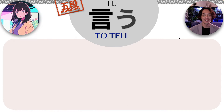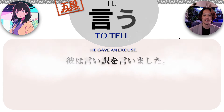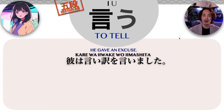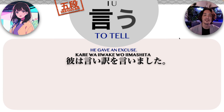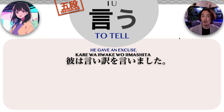Now let's learn three sentences using the verb iu. How would you say 'he gave an excuse' using the verb iu? In Japanese you could say: kare wa iiwake wo iimashita. Iimashita is the past tense of iu — so 'he said.' The verb in English would be 'to give' because it goes with an excuse. In Japanese, 'to give an excuse' is iiwake wo iu — you can memorize it as a set. Iiwake means excuse.